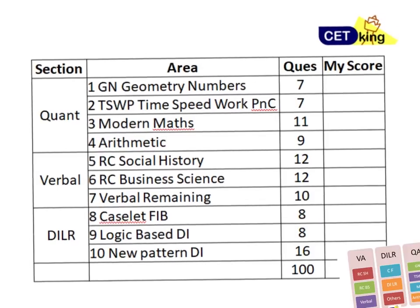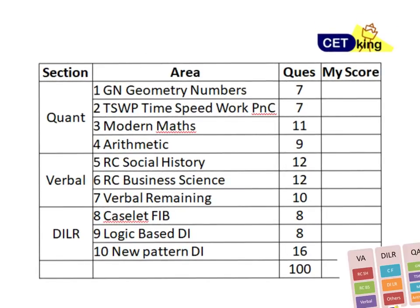So quant there are 4 sections: geometry and numbers 7 questions, time speed distance work PnC probability 7 questions, Modern Maths 11 questions, arithmetic 9 questions. So I am going to make one video on each of these sections to explain the break up.